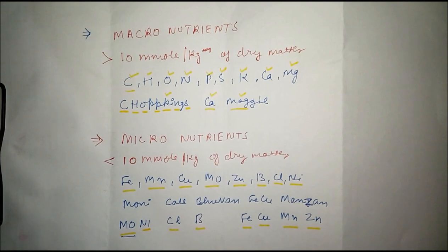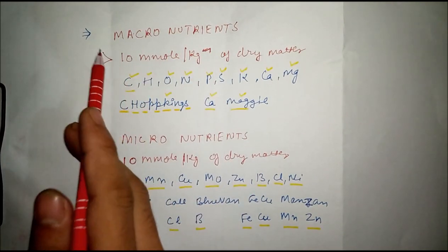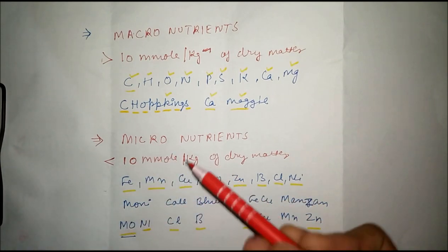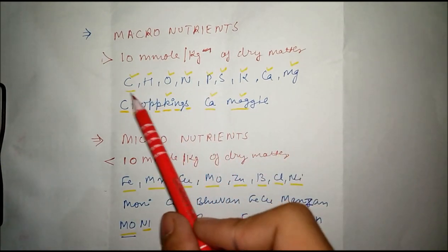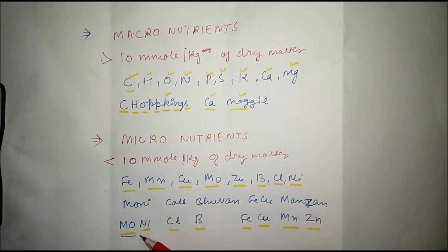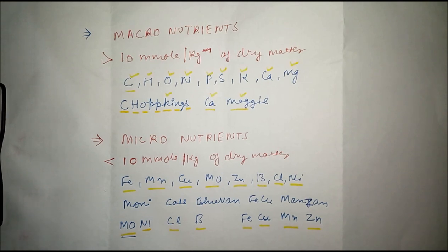Macronutrients are present in greater amount and micronutrients in small amounts. The formula is 'Chopkins Ca Maggi' for macronutrients and 'Moni called beer mom peku manjan' for micronutrients. Thanks for watching, hit the subscribe button if you like and stay tuned for more videos.